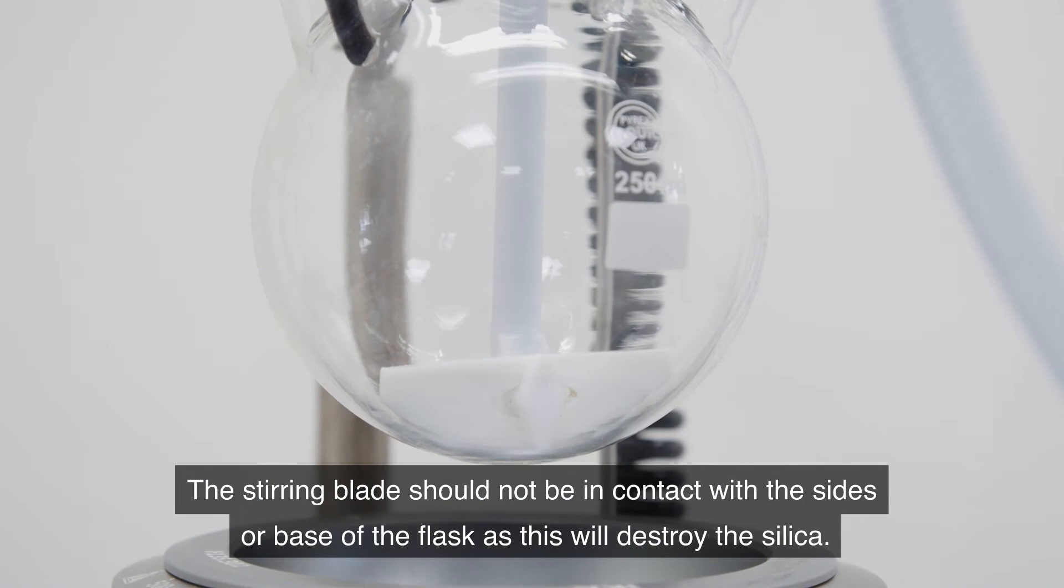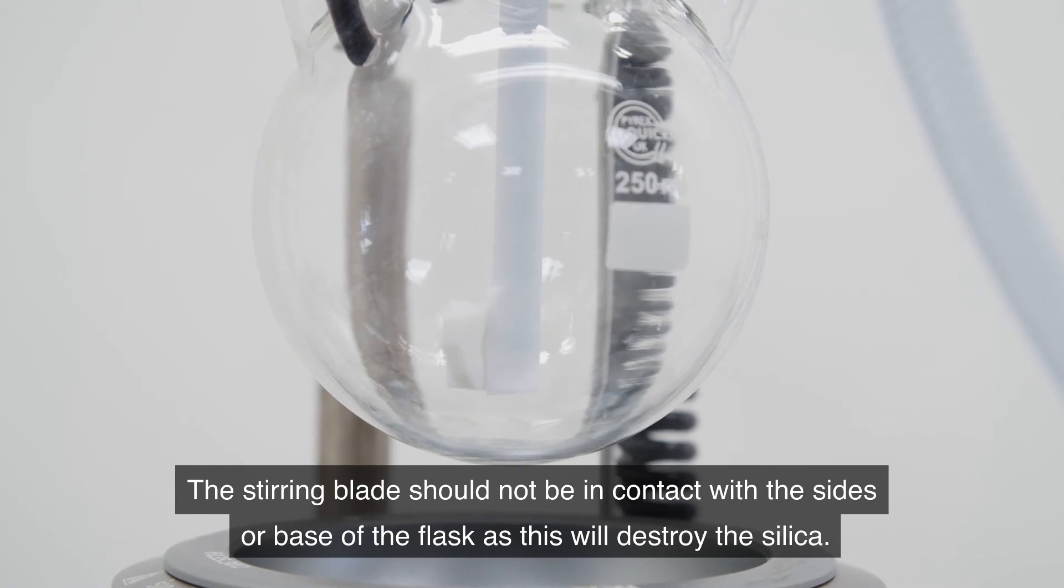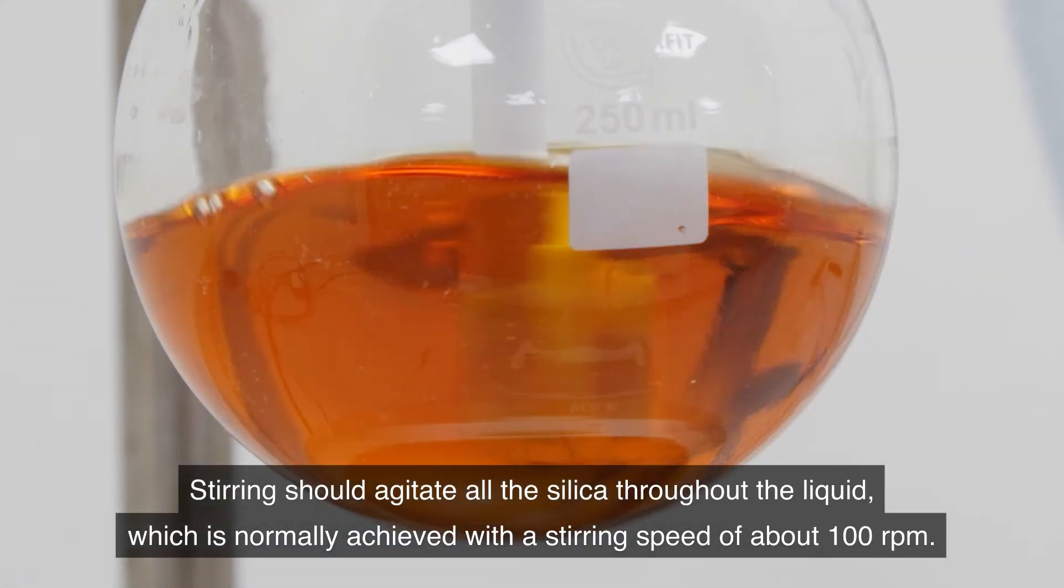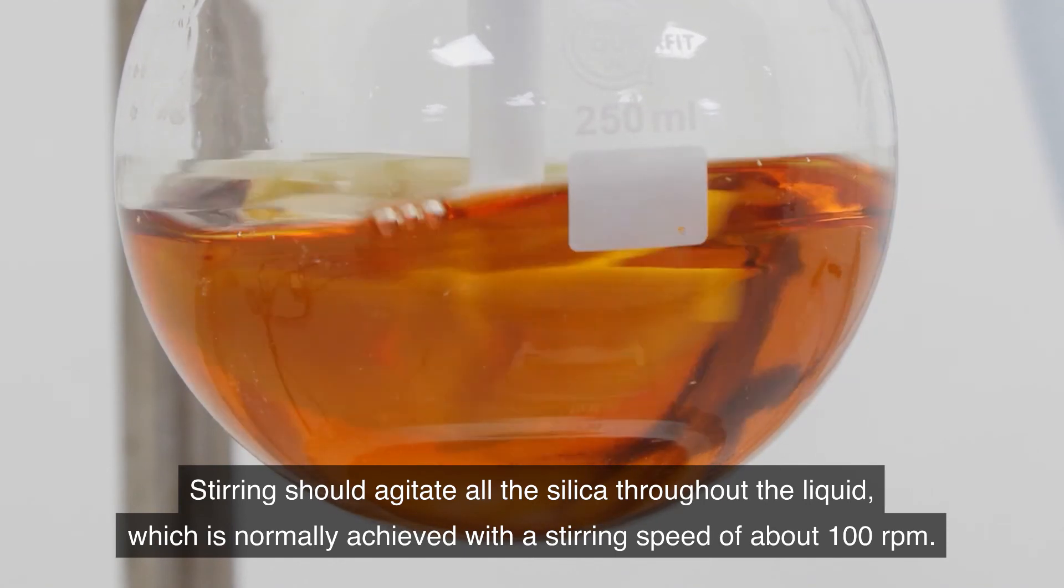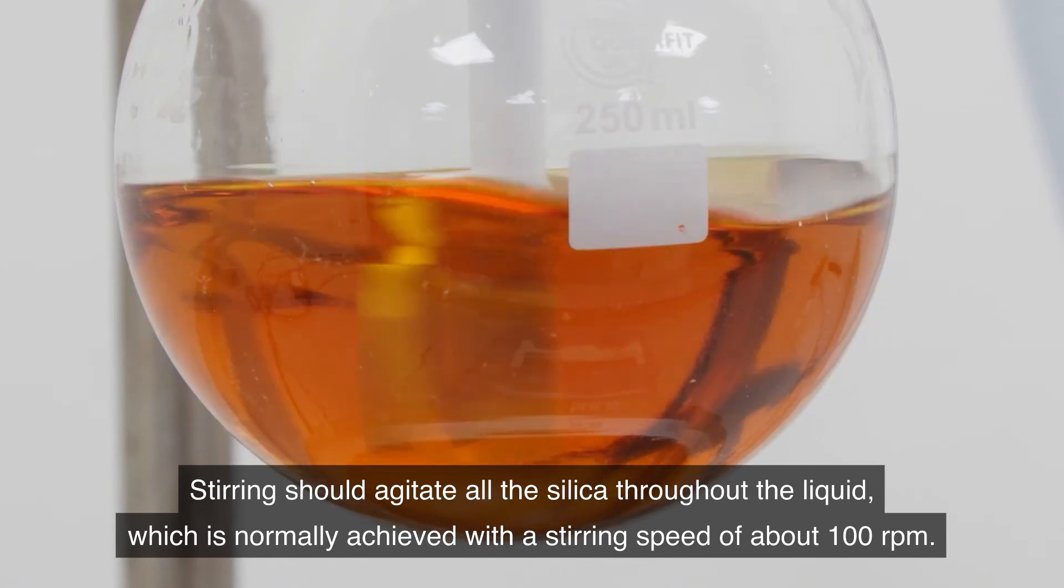The stirring blade should not be in contact with the sides or base of the flask as this will destroy the silica. Stirring should agitate all the silica throughout the liquid which is normally achieved with a stirring speed of about 100 rpm.